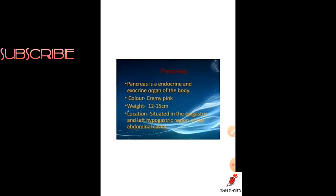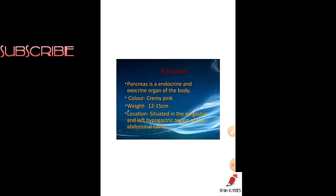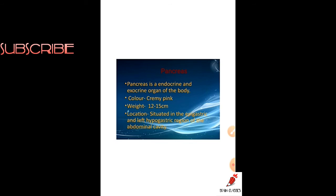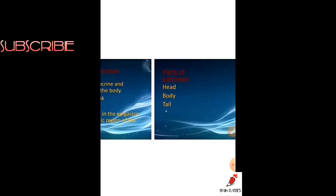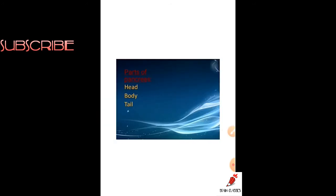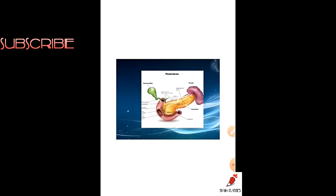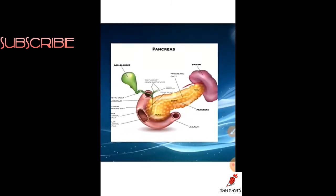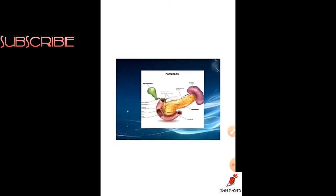The general anatomy of the pancreas: the color of the pancreas is creamy pink. The length of the pancreas is 12 to 15 cm. The location of the pancreas is the epigastric and left hypochondriac region of the abdominal cavity. The parts of the pancreas are head, body, and tail, and it is directly connected to the gallbladder and spleen.